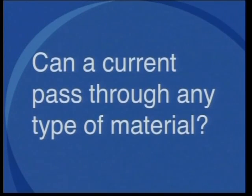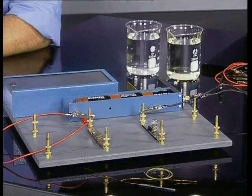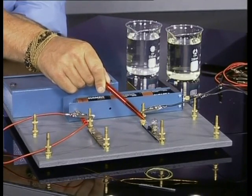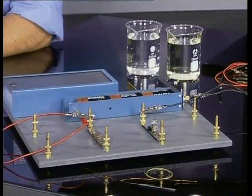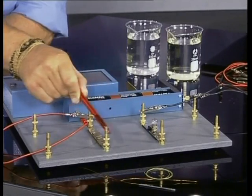Can a current pass through any type of material? We can find this out by setting up an electric circuit which includes a piece of the material that we want to test as an electrical conductor. I have placed a lightbulb in the circuit so that when the material is a good conductor the lightbulb will glow. In this opening or gap is where I will connect the material that I will be testing. If the material is a poor conductor then the lightbulb will glow dimly, but if the material does not allow electric current to pass through it the lightbulb will not glow at all.